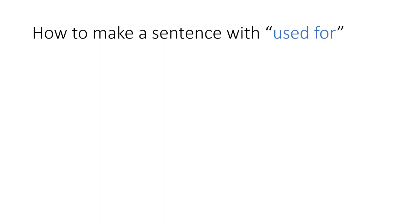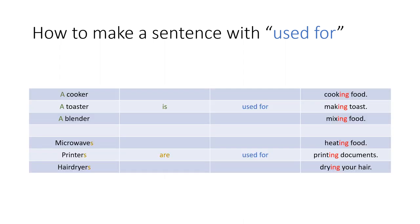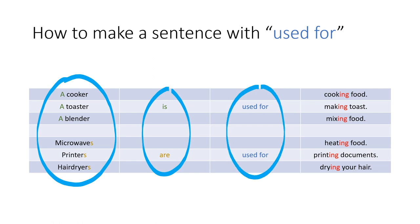How can we make a sentence with used for? Well, we start with our machine. Then we have is or are, used for, and finally the verb with ing.